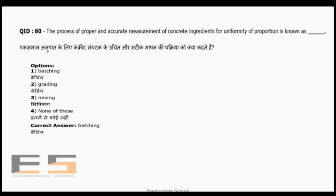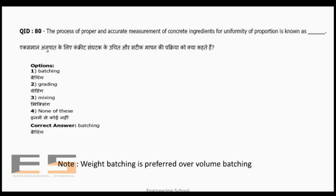Question 80: The process of proper and accurate measurement of concrete ingredients for uniformity of proportion is known as batching. Mixing refers to combining ingredients dry or wet. Note: weight batching is preferred over volume batching, and all batching plants use weight batching.